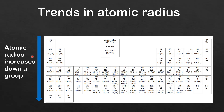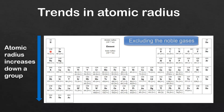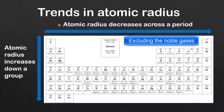So the general trend in the periodic table is that atomic radius increases down a group. Next we look at the trend in atomic radius across a period. Looking at period 2, starting with lithium and moving on to beryllium, boron, carbon, nitrogen, oxygen, and fluorine — as you go from left to right across a period the atomic radius decreases. So the general trend is atomic radius decreases across a period.